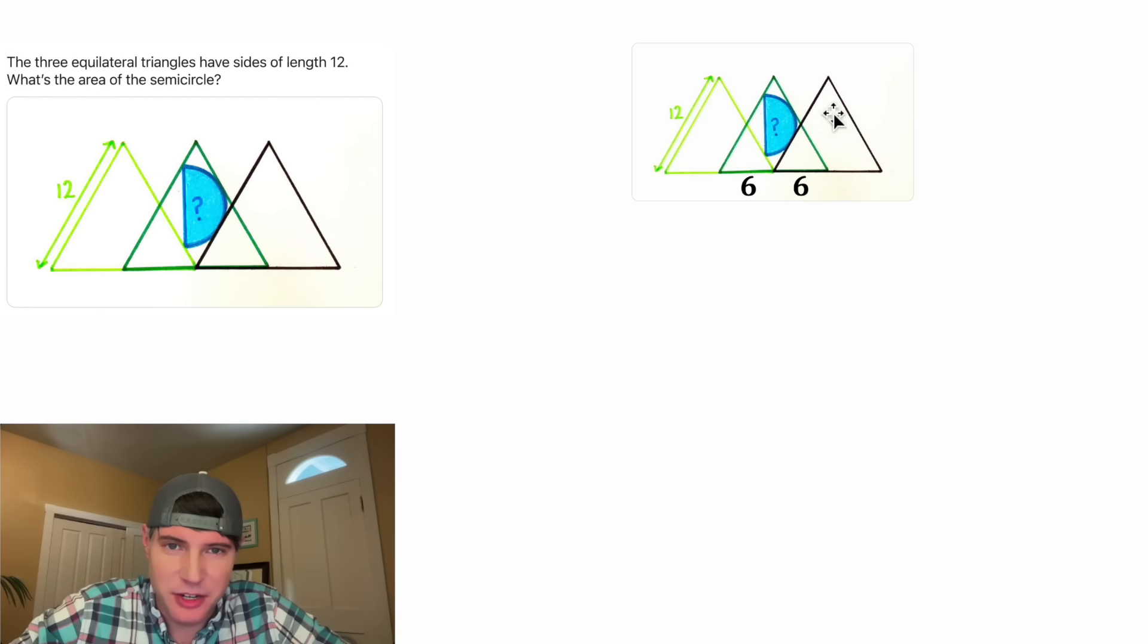Since this angle is 60 degrees because it's shared with this triangle, this angle is 60 because it's shared with this triangle, this last angle would have to be 60 degrees because these add up to 180. So these two sides will all be equal to 6, and then since this whole side is equal to 12 and this is equal to 6, this will also be equal to 6. They'll all be equal to 6.